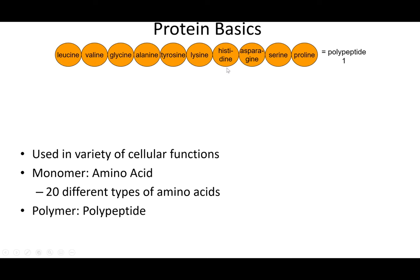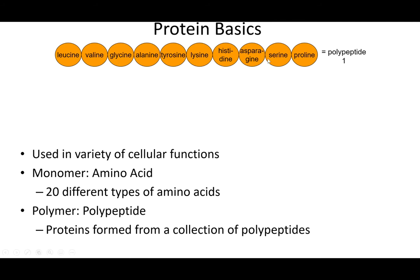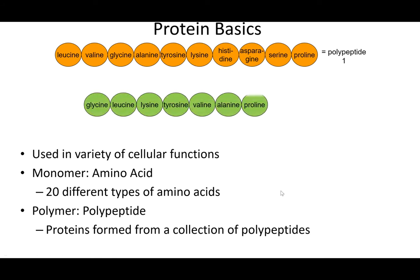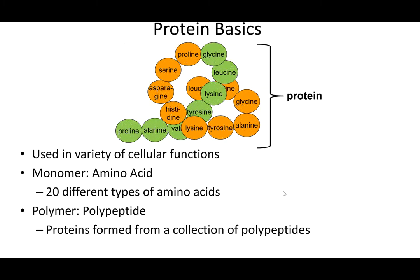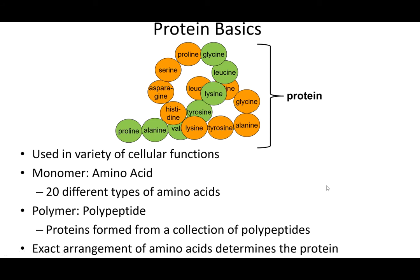When you put amino acids together in a chain, that chain is called a polypeptide. Proteins are formed from a collection of polypeptides. You go from one amino acid, put a string of amino acids together to create a polypeptide, then put multiple polypeptide chains together to form a protein. These polypeptides bend and twist into shapes depending on certain characteristics of the amino acids, and together they form a protein. It's the arrangement — the primary sequence — of these amino acids that determines the shape of the protein.